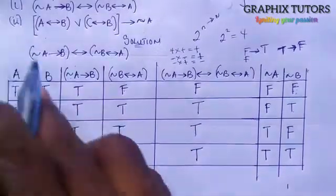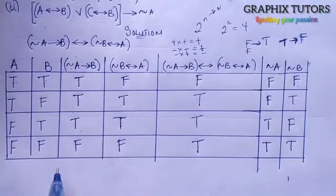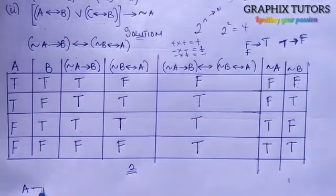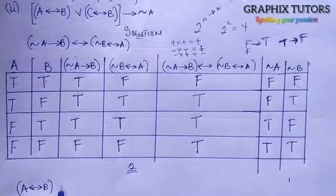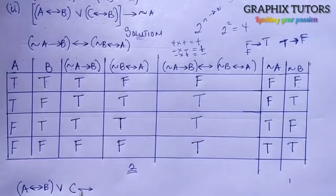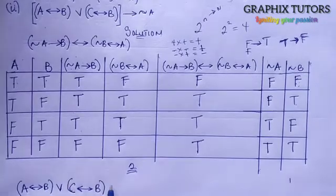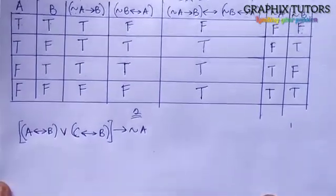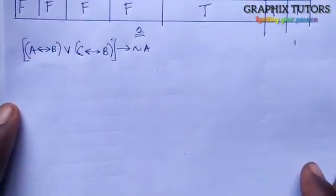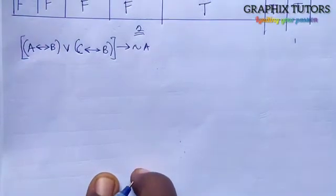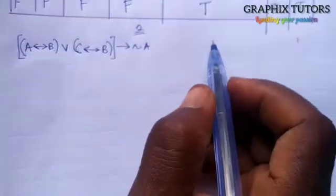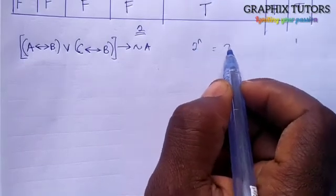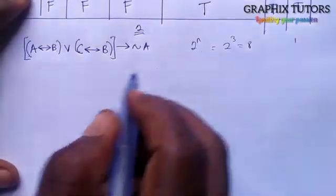Now let's check the other question — number two. The statement is: A by-implies B, or C by-implies B, implies negation of A. First check the number of variables: we have A, B, and C — three variables. The number of rows is two to the power of three, which equals eight.